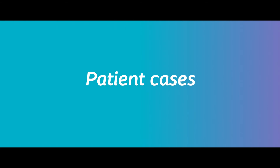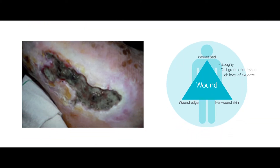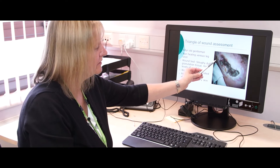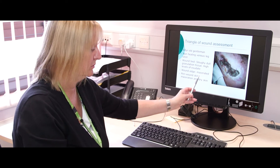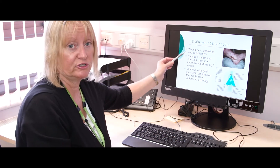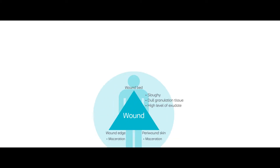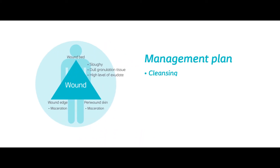Here we have a 68-year-old gentleman with a non-healing venous leg ulcer. Using the Triangular Wound Assessment, you can see that we've got a sloughy wound bed with dull granulation tissue. We have high levels of exudate causing maceration to the peri-wound skin and the wound edges. We debrided this wound but the slough keeps returning, so we suspect we've got a biofilm here. We've used the Triangular Wound Assessment not just to assess the wound but as part of our management plan, which includes cleansing the wound, debriding the wound and managing the exudate.